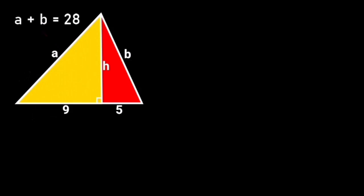Let's go ahead and solve. Since A plus B is equal to 28, it follows that A will be equal to 28 minus B. Let's call this equation 1.